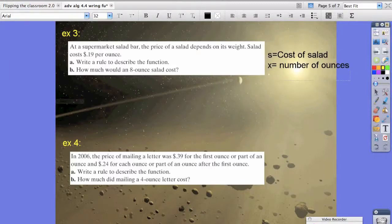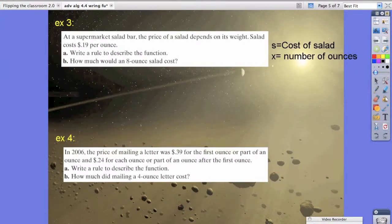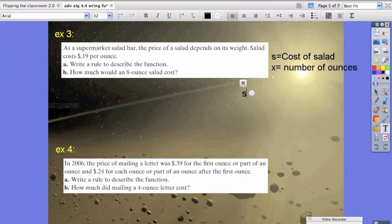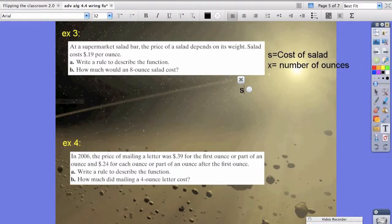Now, we're going to try to solve example 3. It says, s, the cost of the salad, is equal to 19 cents per ounce. And because we don't know how many ounces we have, we're just going to say x. So that is the answer to part 1.